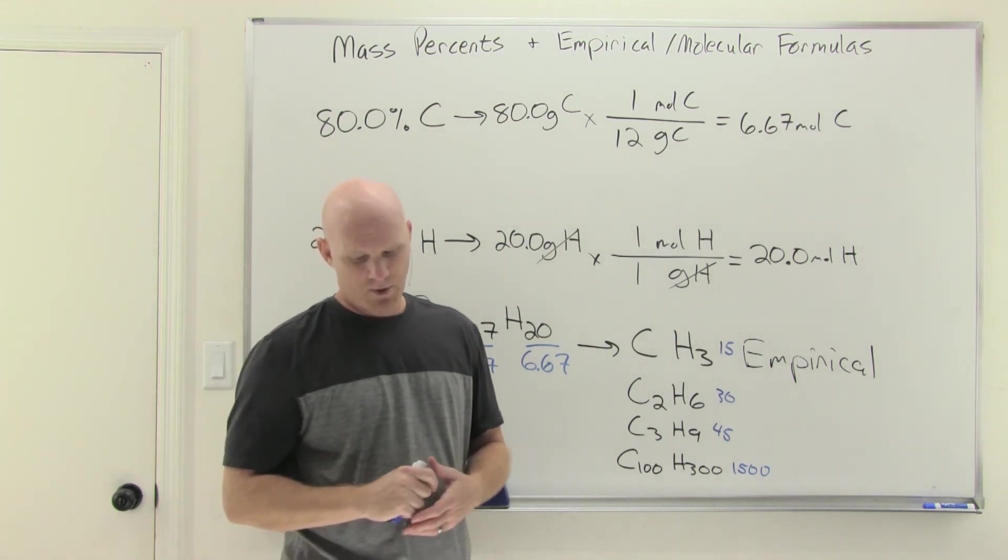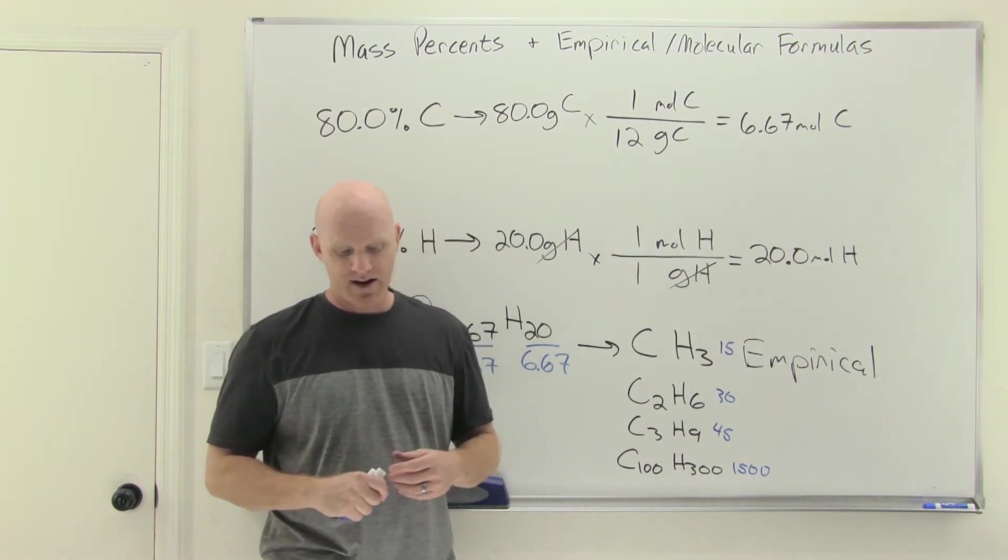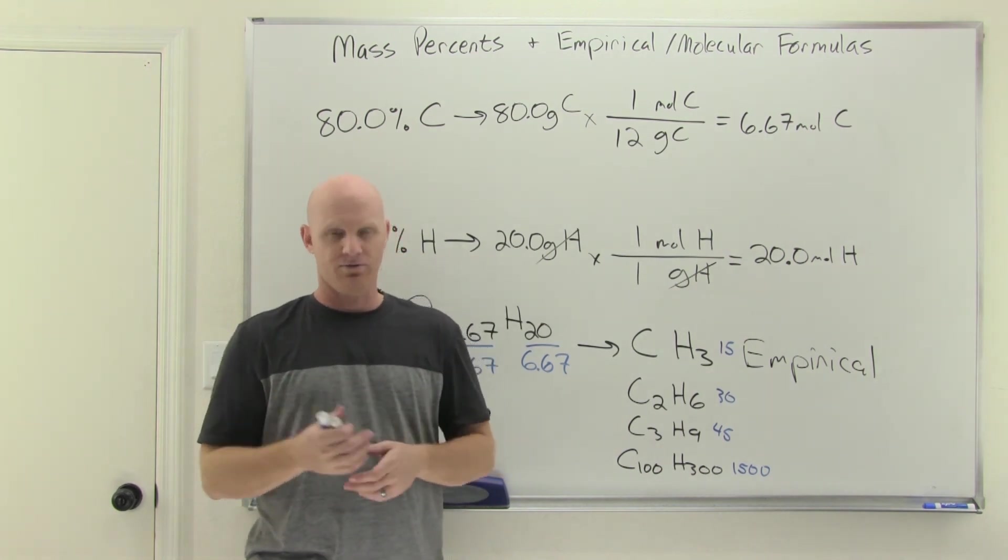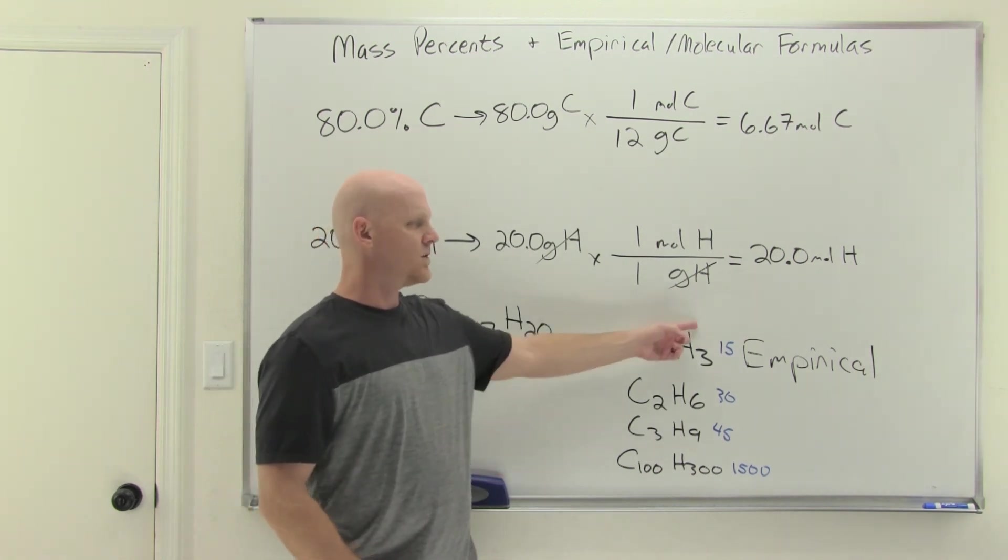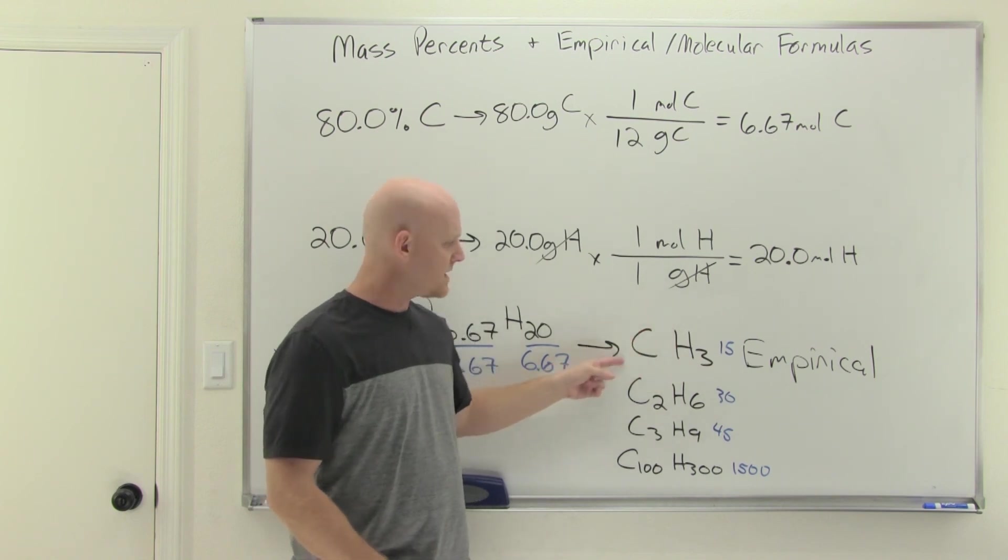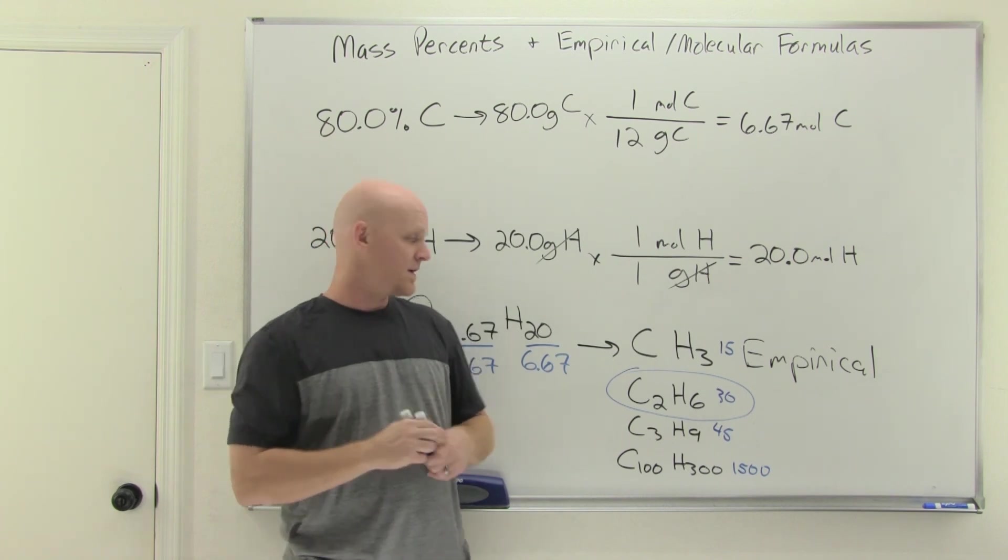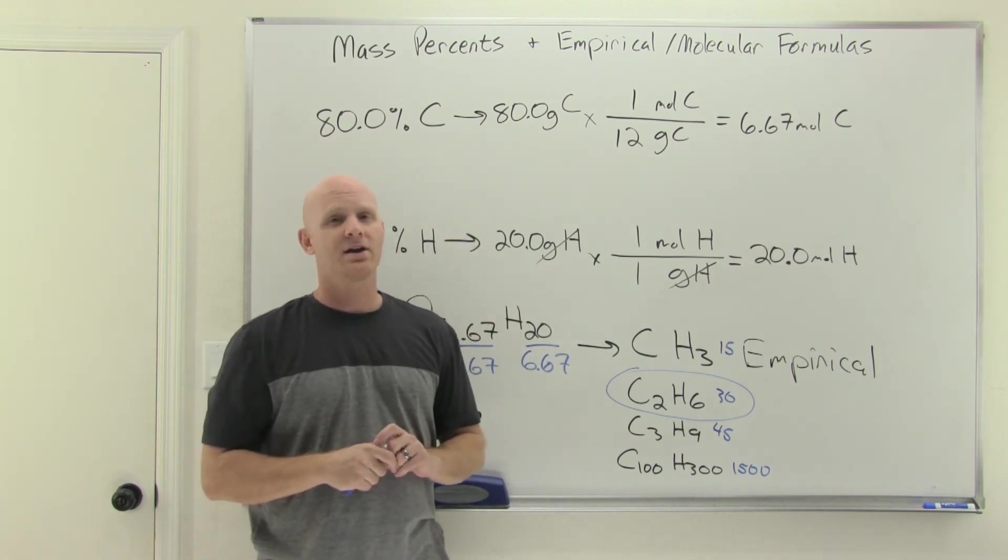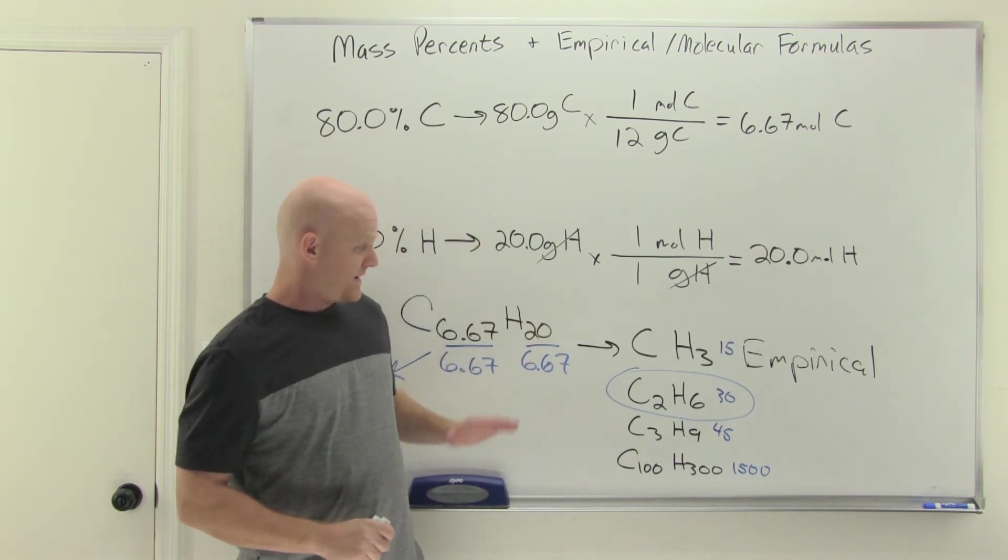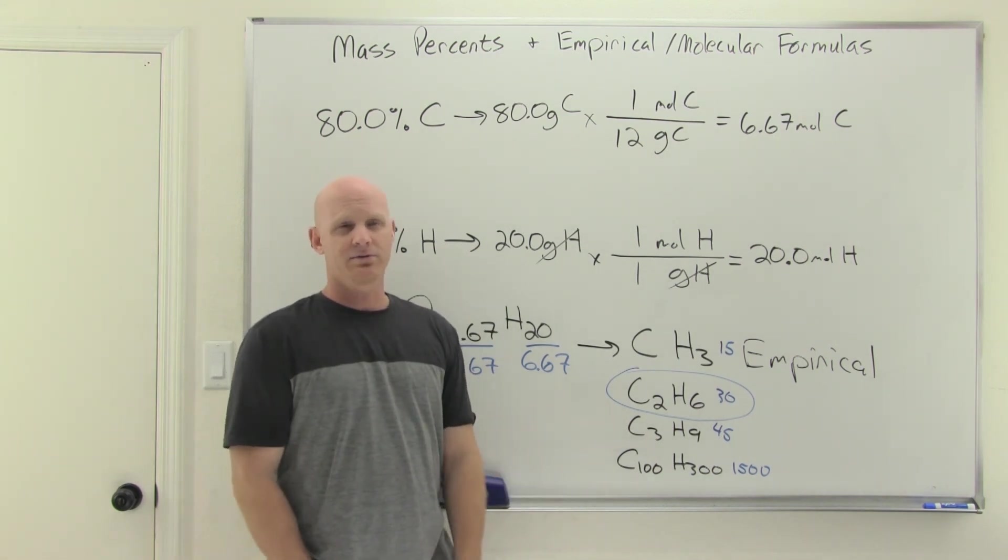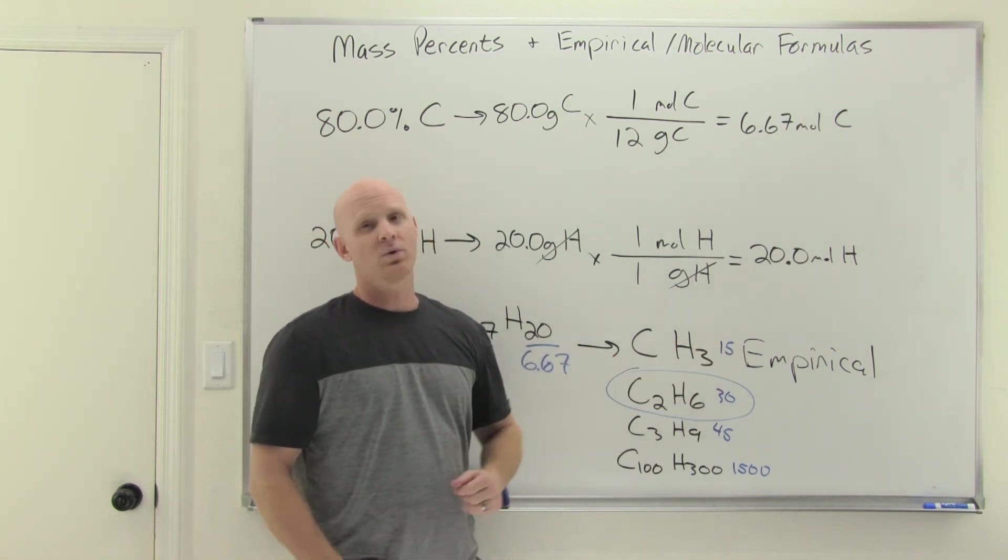Second part of this question: if the compound above has a molecular weight of 30 AMUs, what is its molecular formula? You just be like, well, 15 goes into 30 twice, so I just need to double the formula. Here is our molecular formula, C2H6, one of the examples we went with right from the get-go. But unless I had supplied you with that molecular weight or molar mass, you could not have actually figured out the molecular formula. You would have only been stuck with the empirical.